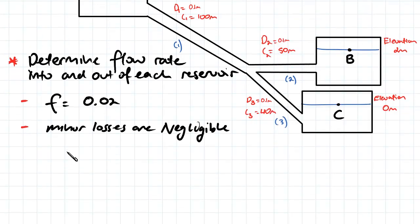That means Q1 plus Q2 is going to equal Q3. So the combined flow rate out of A and out of B is going to equal the flow rate going into C.